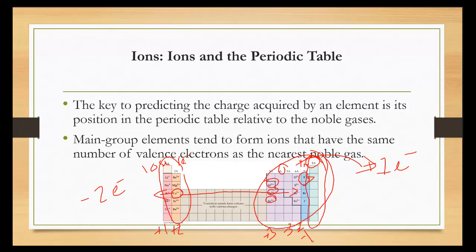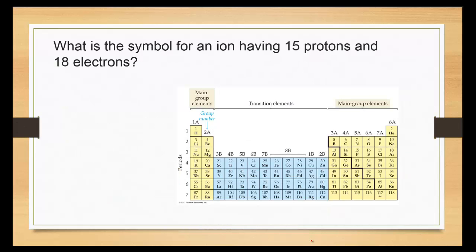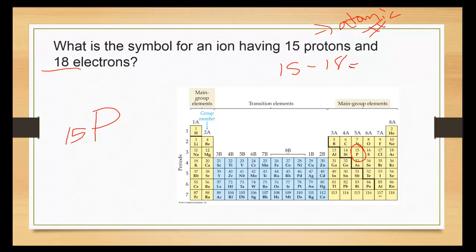So let's use this in practice. What is the symbol for an ion having 15 protons and 18 electrons? Fifteen protons means I'm looking for atomic number 15 — that's phosphorus. The charge is protons minus electrons: 15 minus 18, which is minus 3. Notice how that follows the trend: plus 1, plus 2, plus 3 — skip — minus 3, minus 2, minus 1.